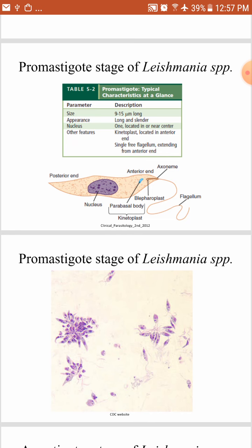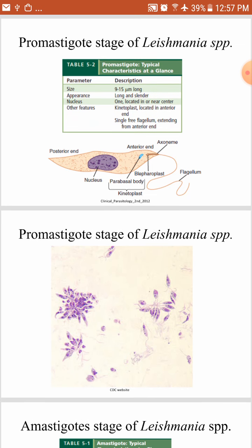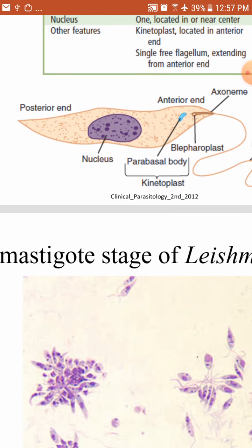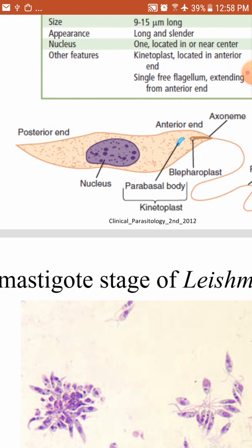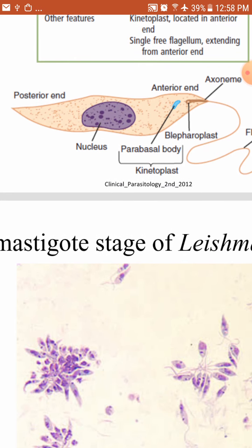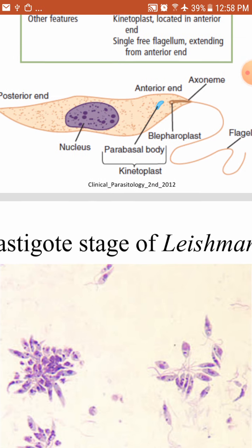Now let's look at the promastigote stage of Leishmania species. It is the infective stage and is present in the sandfly. The promastigote is slender in shape and contains a large nucleus located in or near the center. It also contains a structure called the kinetoplast, which comes from the parabasal body and blepharoblast. From the kinetoplast extends the axoneme, and from the axoneme extends the flagellum. In the promastigote, the kinetoplast is located at the anterior end of the parasite.